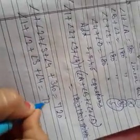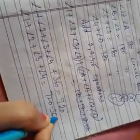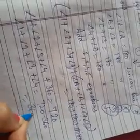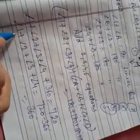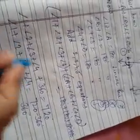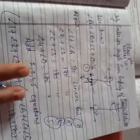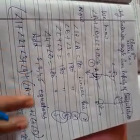720 minus 360 equals 360. That means angle 1, 2, 3, 4—which are the exterior angles of the quadrilateral—their sum is also 360. This is the exterior angle sum property of a quadrilateral.